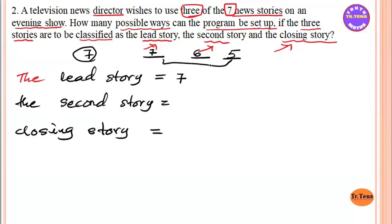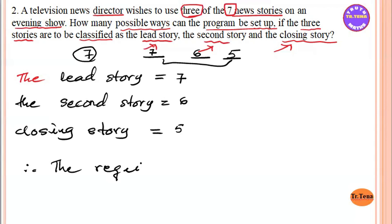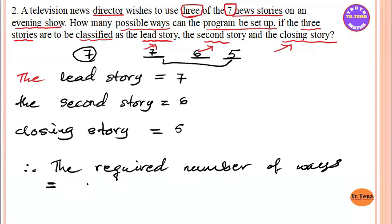This is the multiplication principle. The addition principle and multiplication principle apply here. The second story is 6 and the closing story is 5. The required number of ways using the multiplication principle is 7 times 6 times 5.